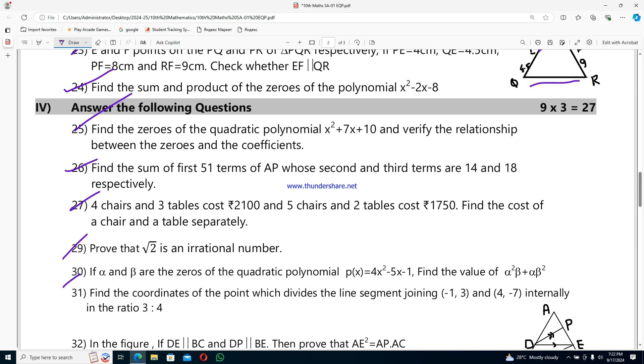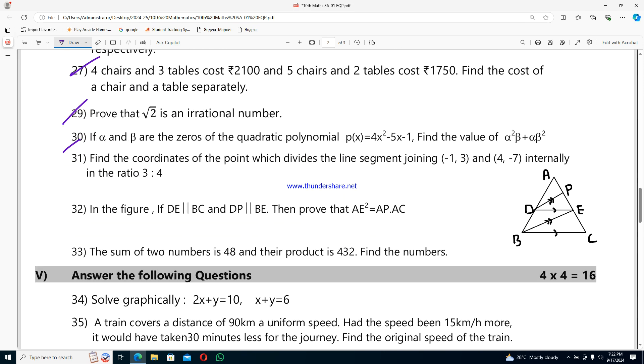Question 28: prove that √2 is an irrational number. Question 29: if α and β are the zeros of the quadratic polynomial p(x)=4x²-5x-1, find the value of α²β+αβ². Question 30: find the coordinates of the point which divides the line segment joining (-1,3) and (4,-7) internally in the ratio 3:4.